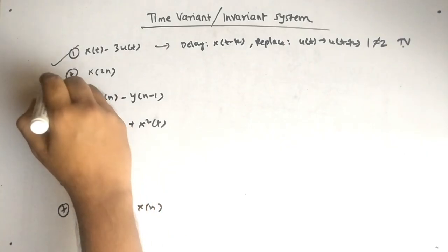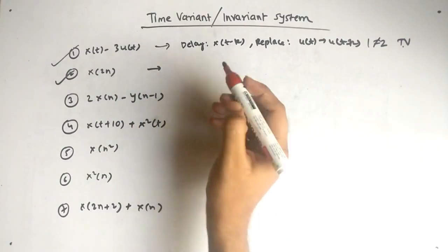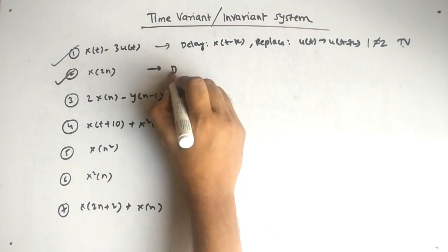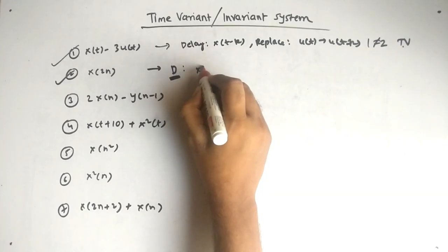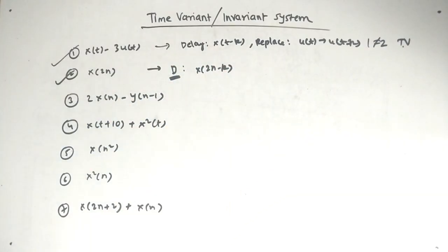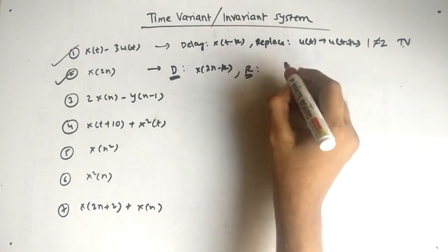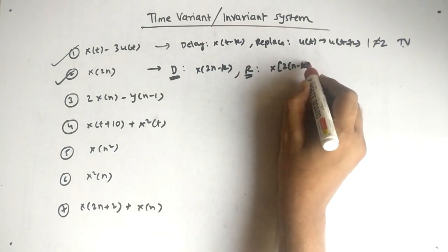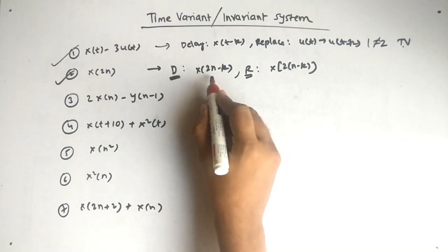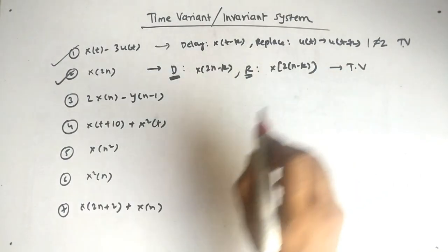Second example is x(2n). In the delay step, we get x(2n − k). But in the replace step, it becomes x(2(n − k)). Again both are not equal, so it is time variant.